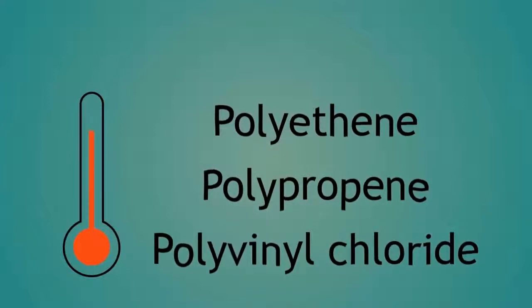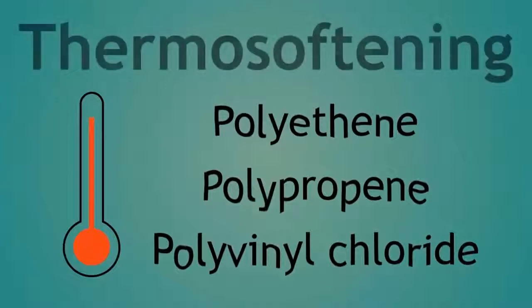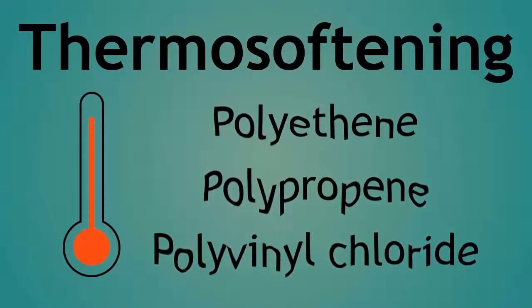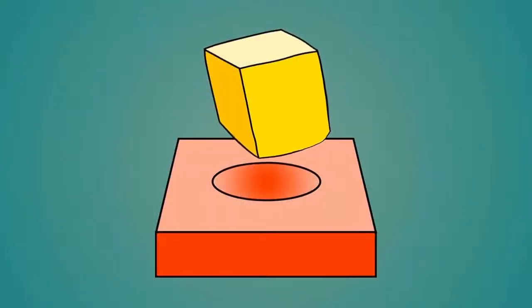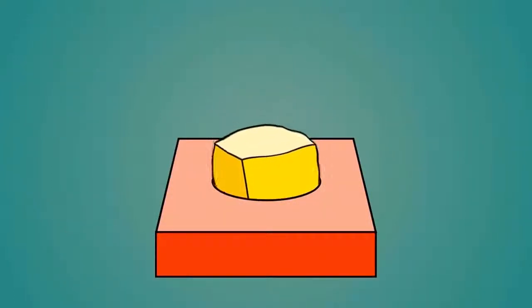Polyethene, polypropene, and polyvinyl chloride are thermosoftening polymers. This means that they soften when heated. When soft and in liquid form, they can be molded into many different shapes.